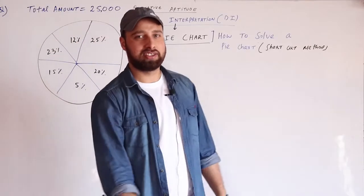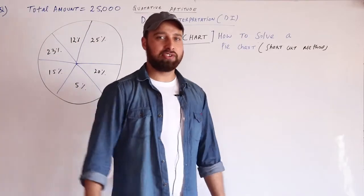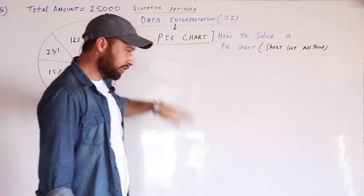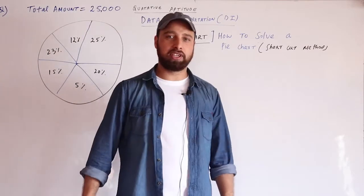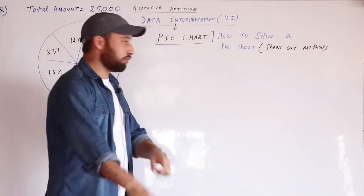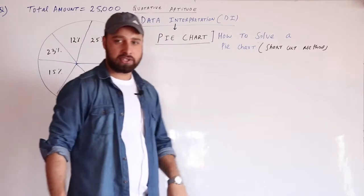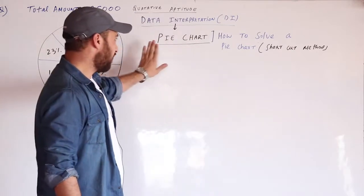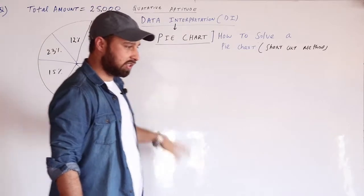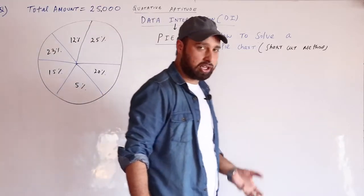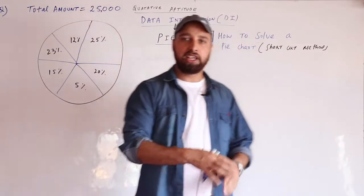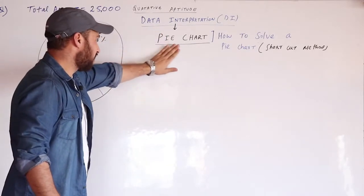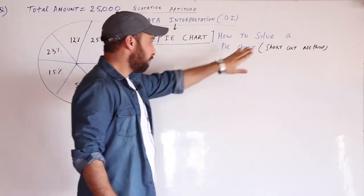Good afternoon class. Today I will teach you about data interpretation — this is one of the most important topics in quantitative aptitude. There are different topics in data interpretation: one is the pie chart, second is the tabulation method, and third is the linear graphs. Let us start from the pie chart and how to solve it by shortcut method.